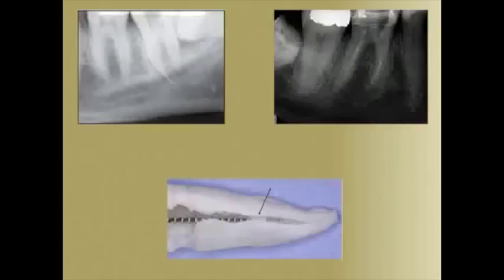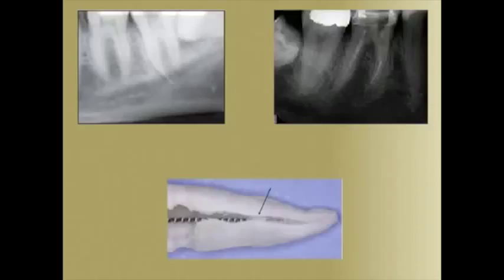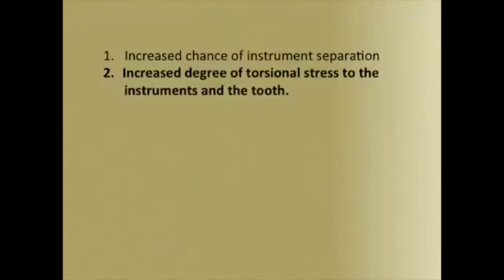Here we see examples of separated instruments. They can break in the coronal, middle, and apical third. Due to their flute design coupled to rotation, the instruments may break after they have inadvertently been drawn beyond the apical confines of the root. The canals are not predictably conical along their length, often having areas that are constricted. A significantly tapered instrument may quickly bind at these locations and, because of rotation, produce stresses that overcome the elastic limit of the metal, leading to separation — generally some combination of torsional stress and cyclic fatigue.